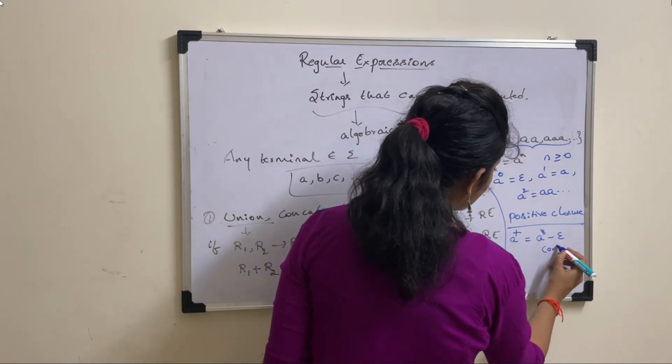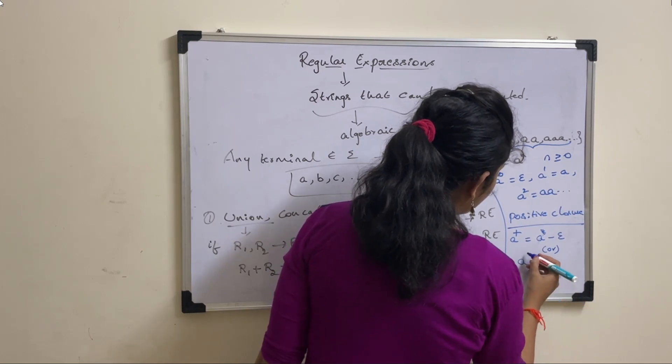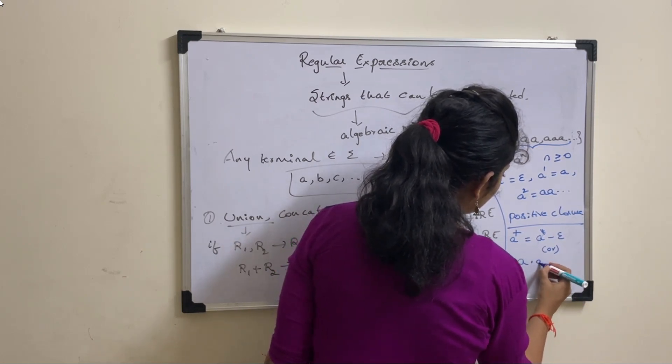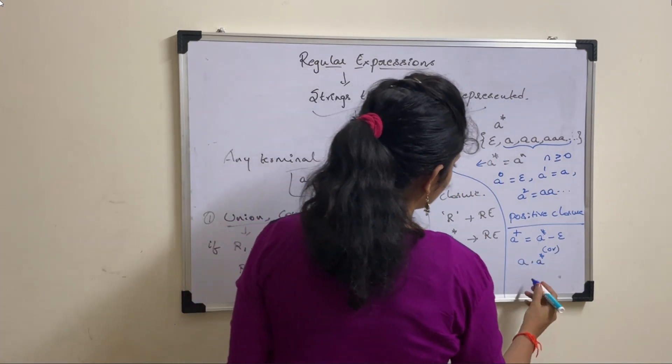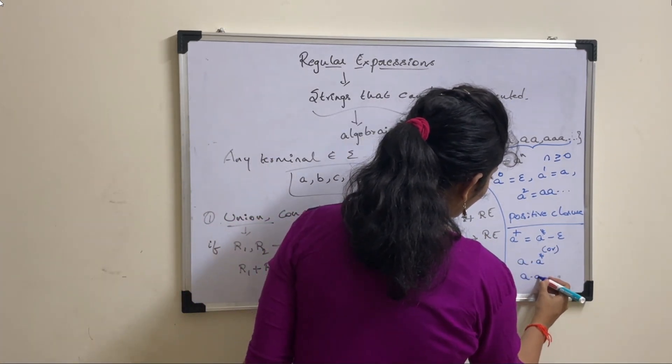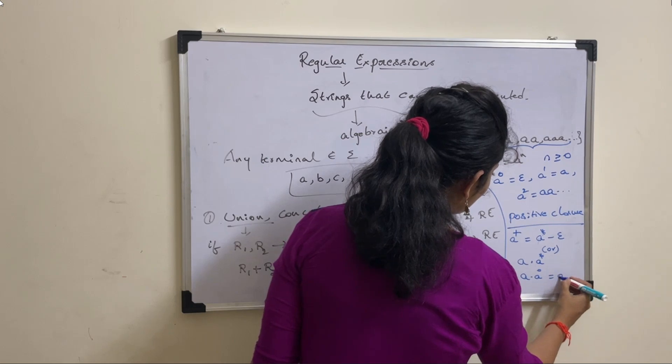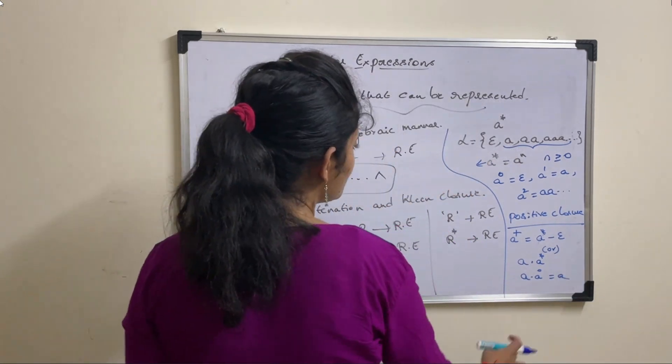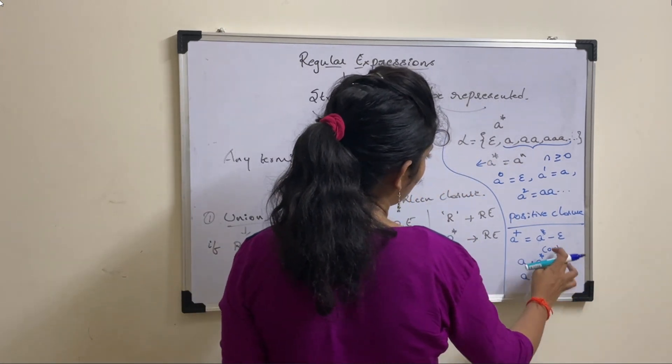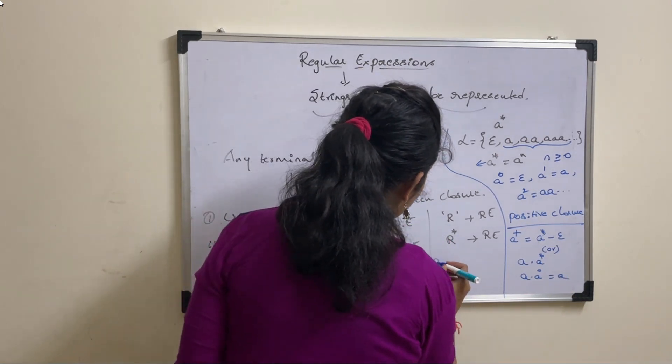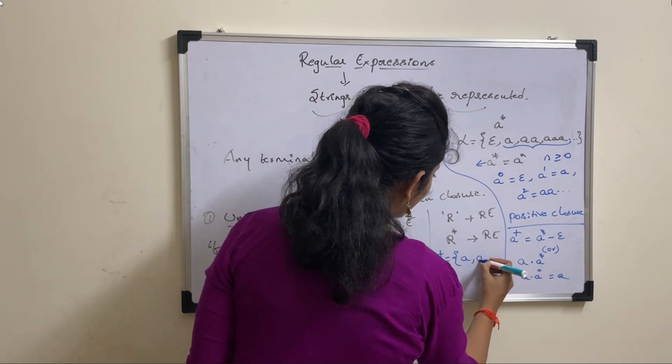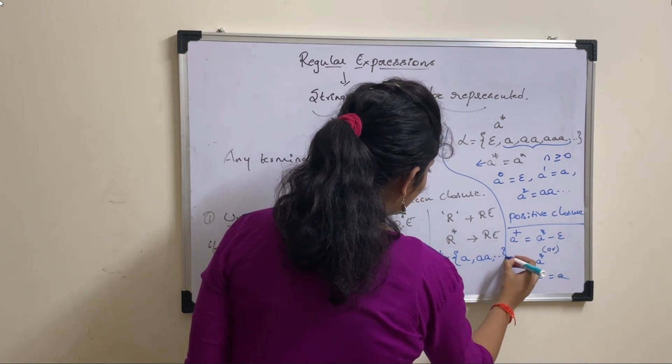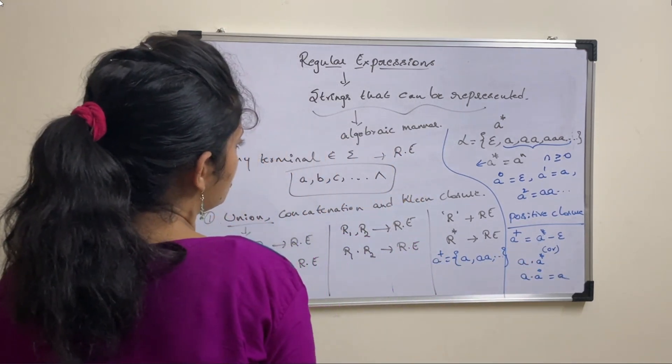We can even write this as A into A star. Say, suppose if N value is 0, then it becomes A into A power 0, which is nothing but A. Minimum string in A plus will be A, but not epsilon. A plus can be defined as A, minimum string A, AA and any number of A's.